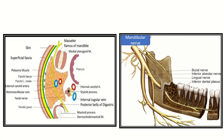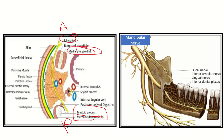Here we can see the parotid gland and here is the mandible, which is the anterior part. The posterior part includes the mastoid process and sternocleidomastoid muscle insertion. Anteriorly we can see the ramus of the mandible, masseter muscle, and medial pterygoid muscle. The structures very close to the parotid gland are at risk of injury.